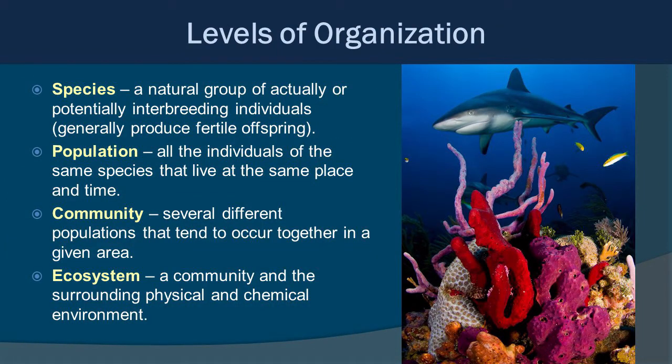We can look at levels of organization within a system. We can start simple, like a species, and go all the way to the most complex ecosystem or even biosphere. A species is a natural group of actually or potentially interbreeding individuals that generally produce fertile offspring — for example, the shark, the juvenile bluehead wrasse, and some sponges. A population is all the individuals of the same species that live in the same place at the same time — so all the sharks, all the fish of each species in that area.